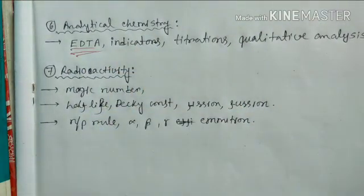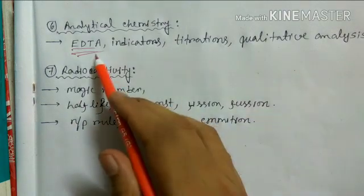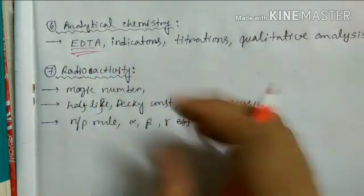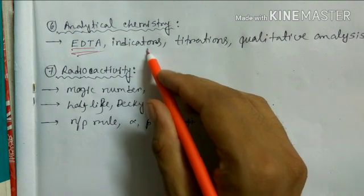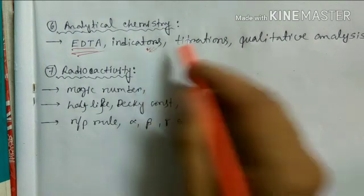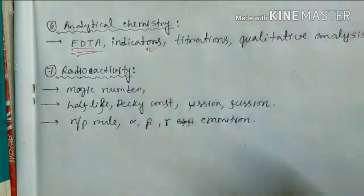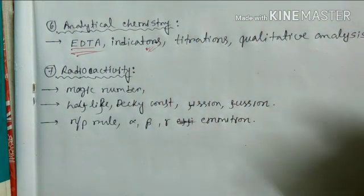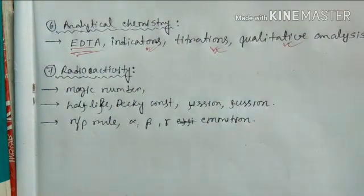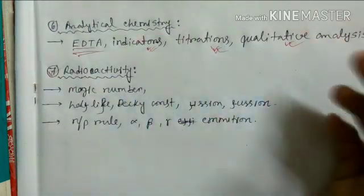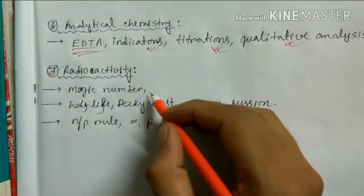For analytical chemistry, cover all the reactions and binding properties of EDTA, the charge of the resulting metal complex, the indicator properties of organic compounds used in inorganic chemistry, titrations, and qualitative analysis — basically the practical work you do in B.Sc.